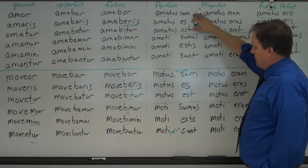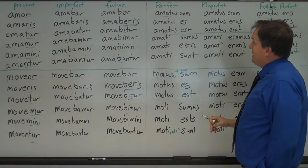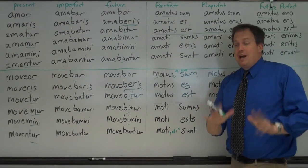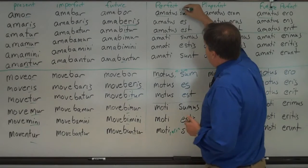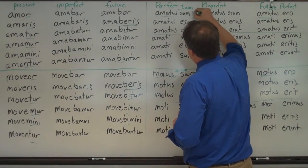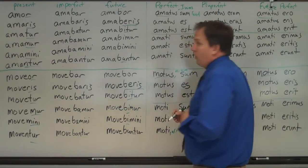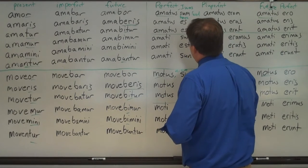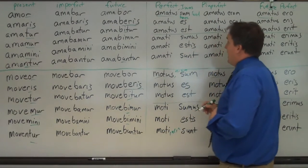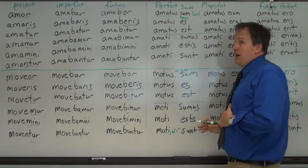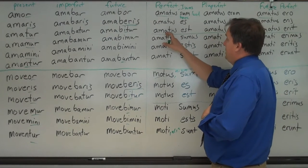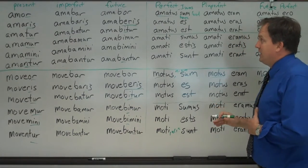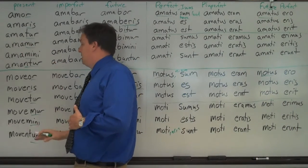For the perfect tense in the passive, you use sum, and you just conjugate sum like always. Now the trick here is how do you translate it? You want to say I am loved. No, don't do that. This is perfect. So it's I was loved or I have been loved. You can say I was loved or I have been loved, you were loved, you have been loved, he has been loved, or he was loved. But not say is. If you say he is loved, that would be amatur.